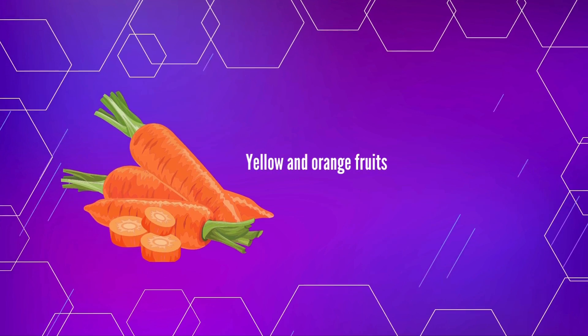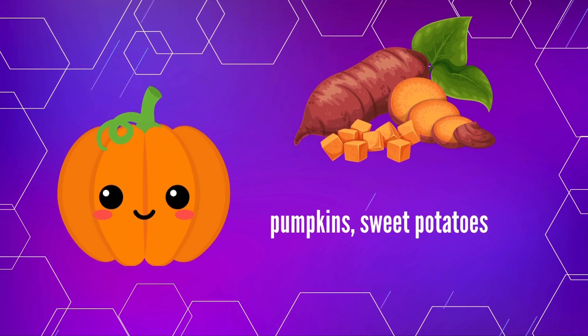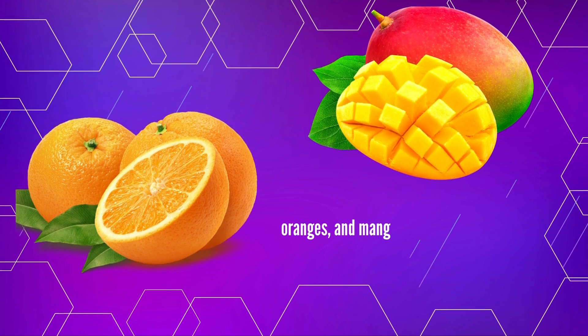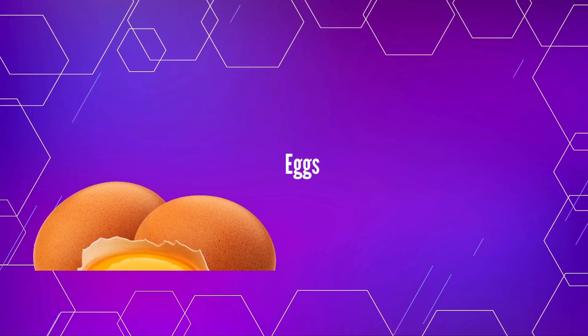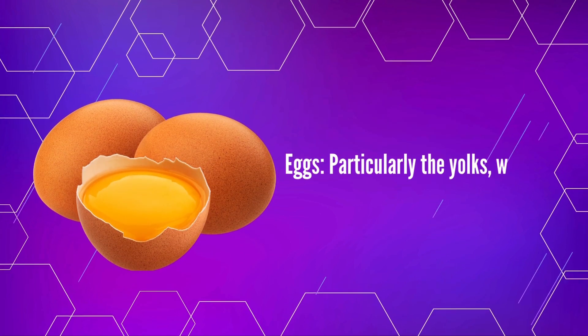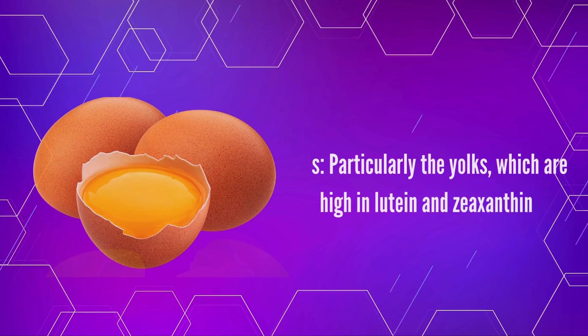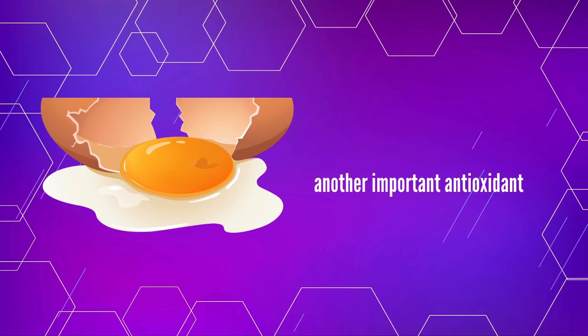Yellow and orange fruits and vegetables: carrots, pumpkins, sweet potatoes, oranges, and mangoes contain lutein. Eggs, particularly the yolks, which are high in lutein and zeaxanthin, another important antioxidant.